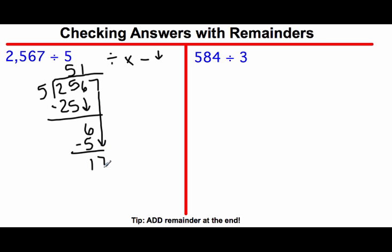How many times does 5 go into 17? I know that 5 times 3 is 15. So 3 times 5 is 15. Leaves us with a remainder of 2. So the answer is 513 remainder 2. Or at least I think that's what the answer is.